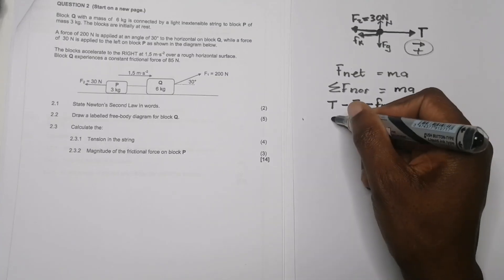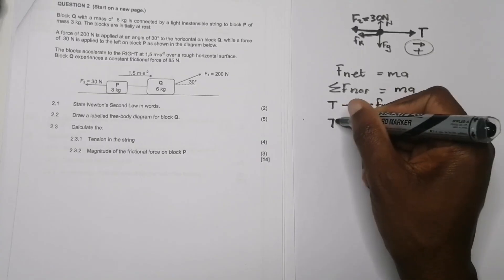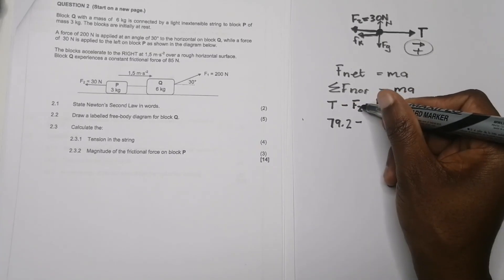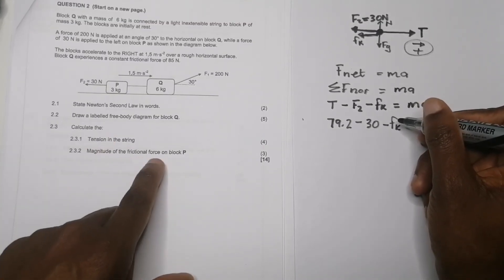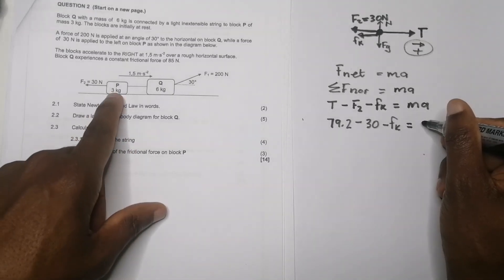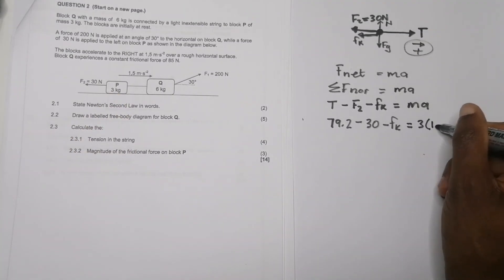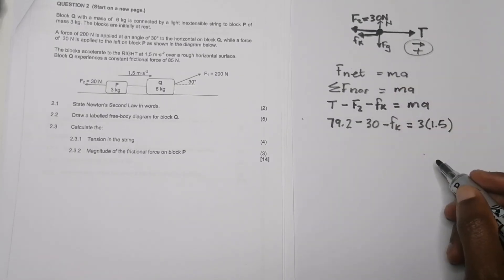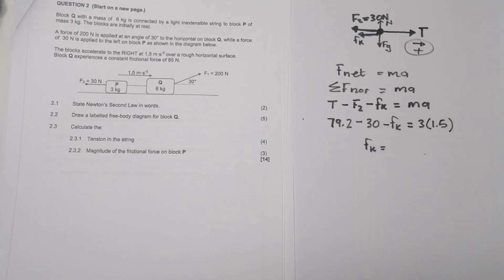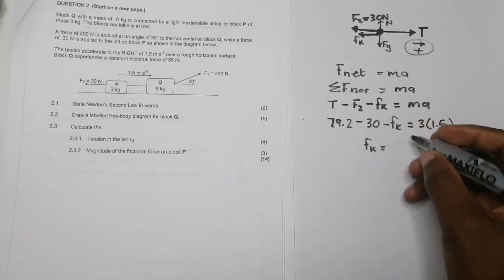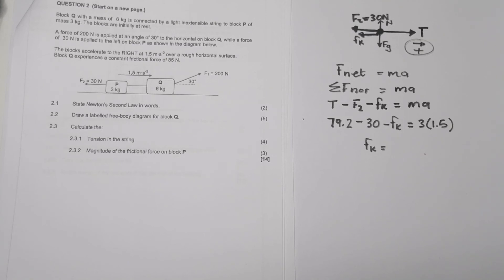Substituting known values: 79.2 − 30 − fk = 3 × 1.5. Rearranging, fk = 79.2 − 30 − (3 × 1.5).